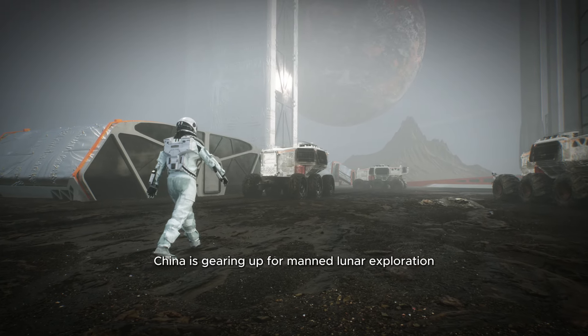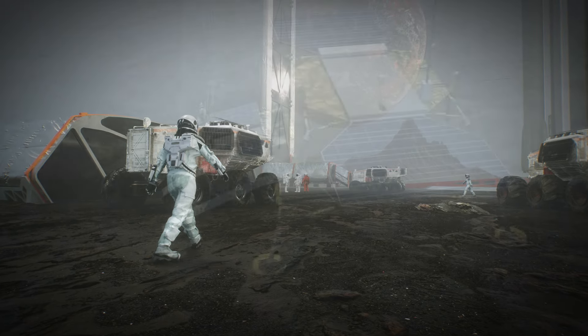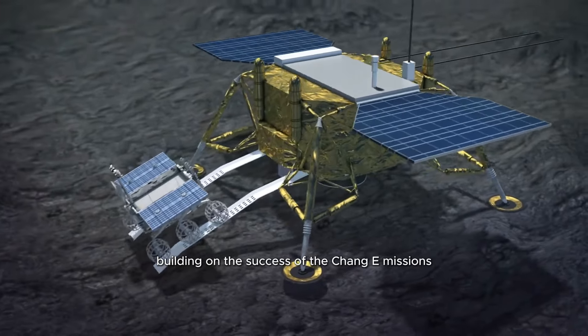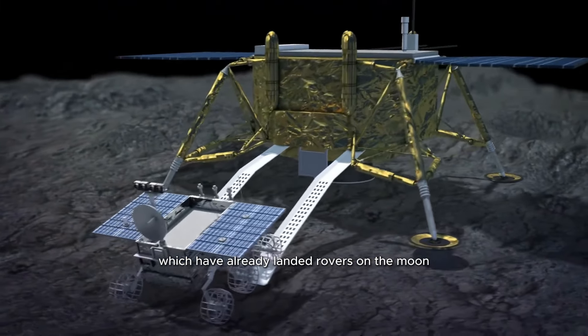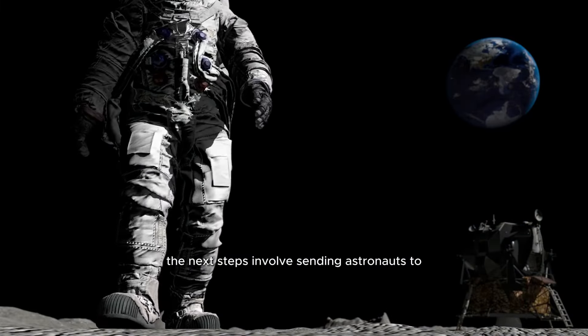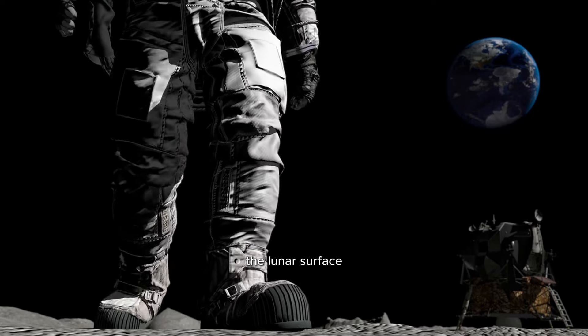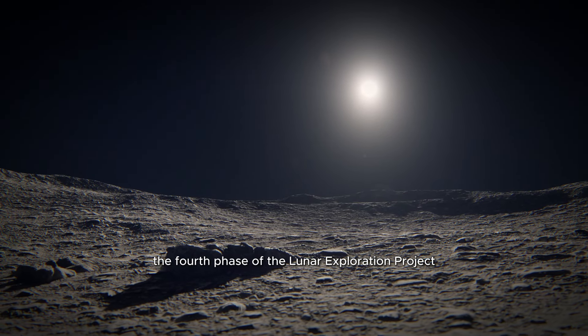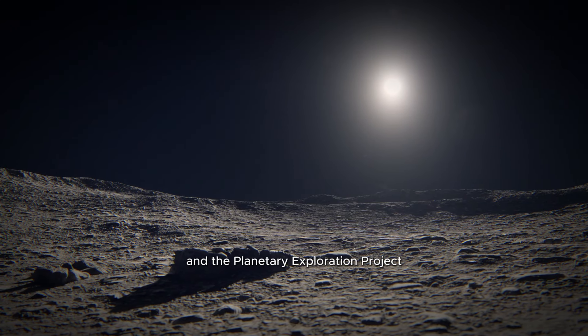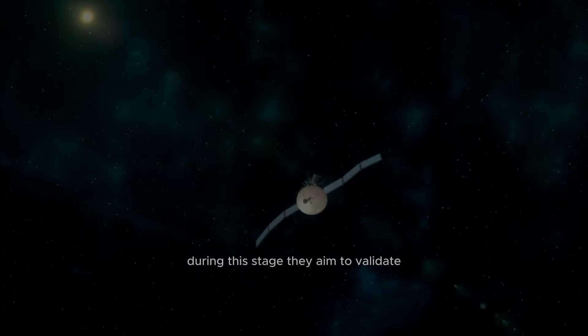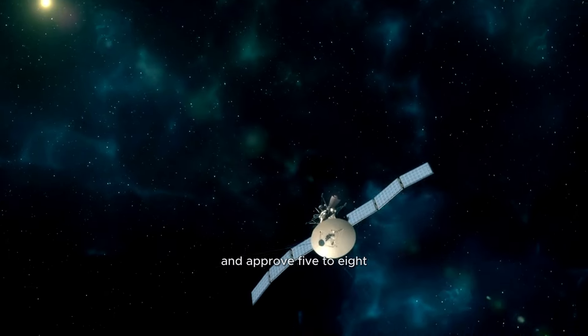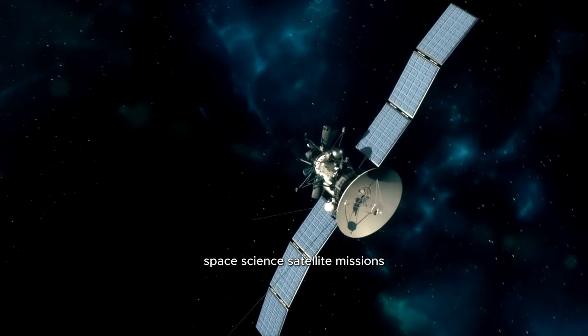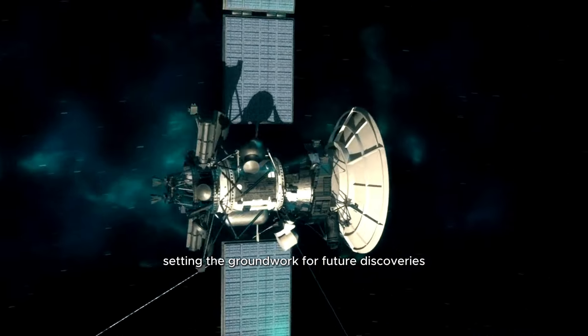Additionally, China is gearing up for manned lunar exploration. Building on the success of the Chang'e missions, which have already landed rovers on the moon, the next steps involve sending astronauts to the lunar surface. This includes advancing the fourth phase of the Lunar Exploration Project and the Planetary Exploration Project. During this stage, they aim to validate and approve five to eight space science satellite missions, setting the groundwork for future discoveries.